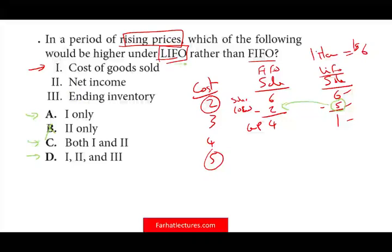Would net income be higher under LIFO? No — because if cost of goods sold is higher, net income is lower. So net income is out, which eliminates C and D. By process of elimination, answer one is correct. Let me verify ending inventory: under LIFO, I take out the $5, leaving $4 + $3 + $2 = $9. So ending inventory is lower under LIFO, not higher — confirming that answer A, cost of goods sold only, is the correct answer.